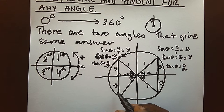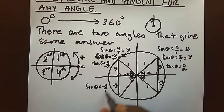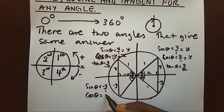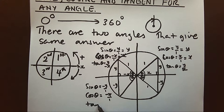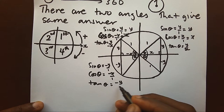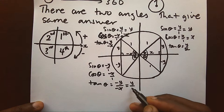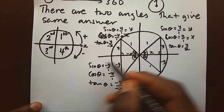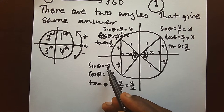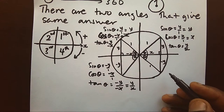In the third quadrant, sine is given by negative y over 1, that is negative y. Cosine is given by negative x over 1, giving a negative result. Tangent is given by negative y over negative x, giving a positive answer. So in the third quadrant, sine and cosine are negative, but tangent is positive.